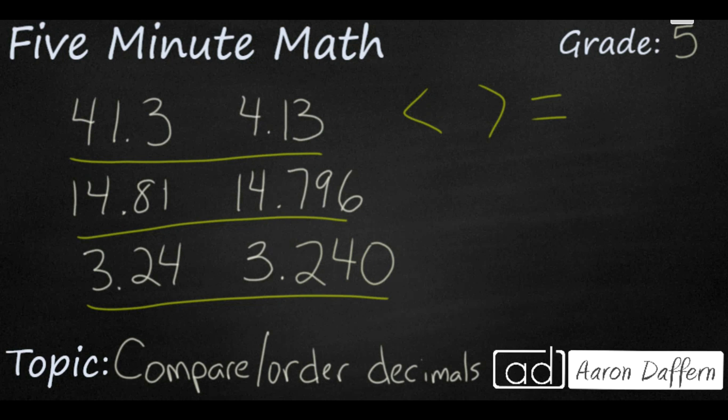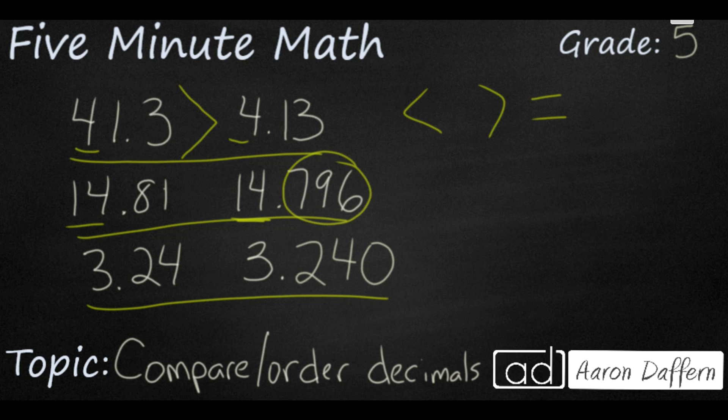Checking our answers, this first one should be pretty simple. This first number has a 4 in the tenths place. The second number doesn't have any digit in the tenths place. 41 is greater than 4. You don't even need to look at the decimals. The second number you will need to look at the decimals because they both have 14 as whole numbers here. Even though the 796 might look large, always make sure they both go to the same place value. And you make a 0 here in the thousandths place and you see that 810 is going to be greater than 796. It's the 8 in the tenths place that makes it larger.